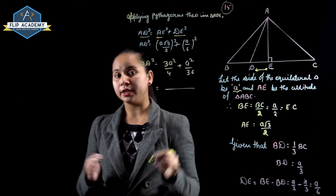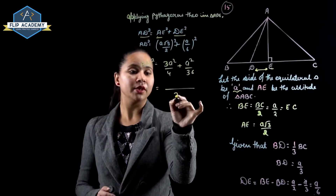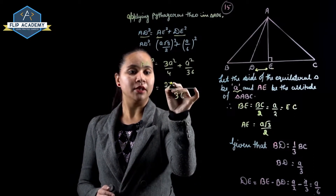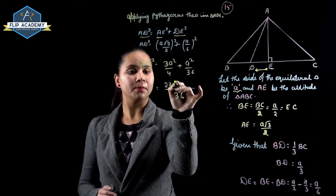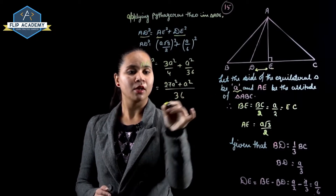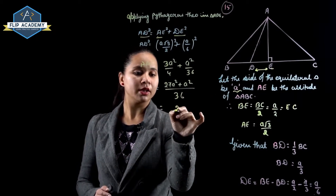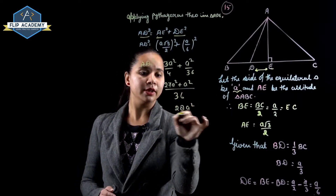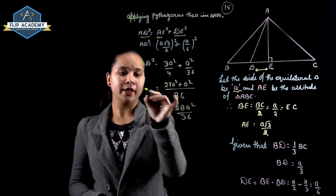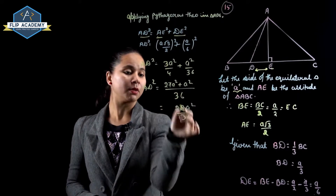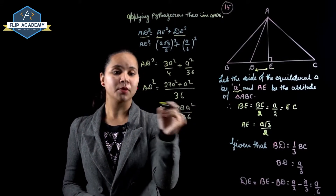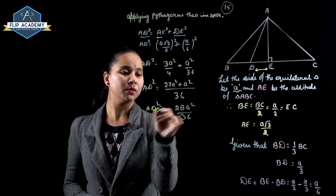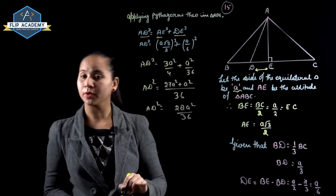Taking LCM of 4 and 36, which is 36: AD² equals 27A²/36 plus A²/36, giving 28A²/36.